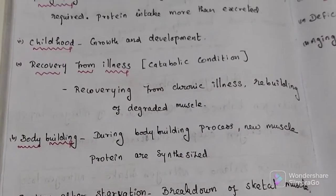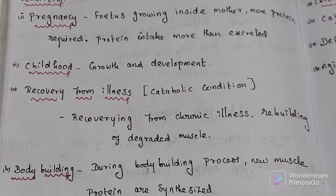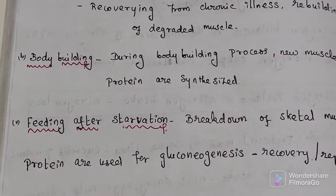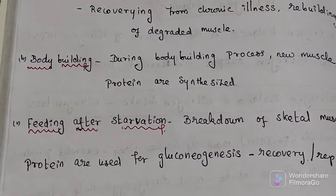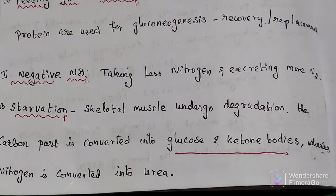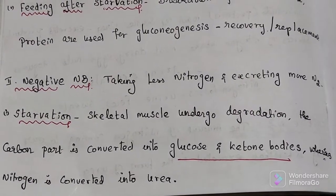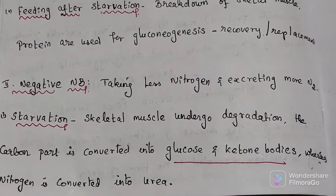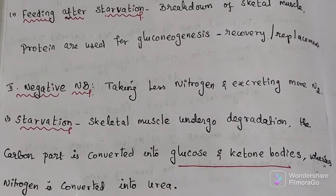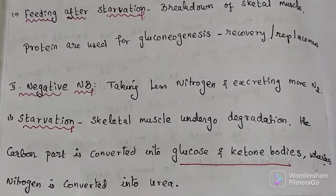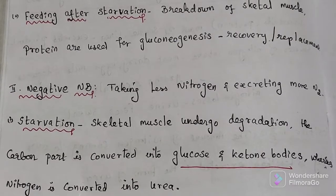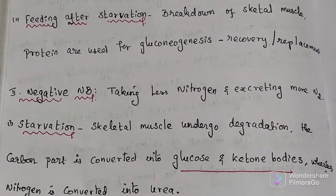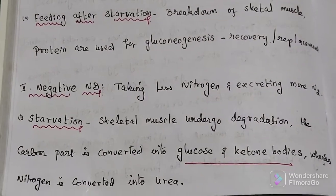To summarize, examples of positive nitrogen balance include pregnancy, childhood, recovery from illness, bodybuilding, and feeding after starvation. In negative nitrogen balance, the person is taking in less nitrogen and excreting more nitrogen. This means the proteins already present in the body are being broken down — amino acids undergo catabolism and the nitrogen present in those amino acids is lost.